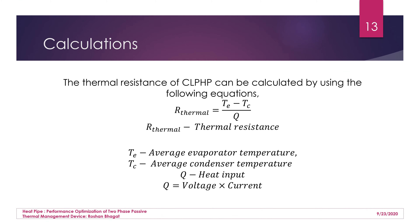Thermal resistance is calculated as the difference between the average evaporator temperature (Te) and average condenser temperature (Tc) divided by the heat input Q, where Q equals voltage times current. The number of thermocouples in the evaporator and condenser regions determines the temperature averages used in this calculation.